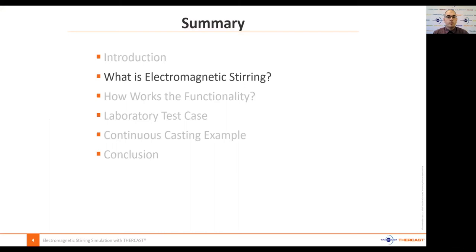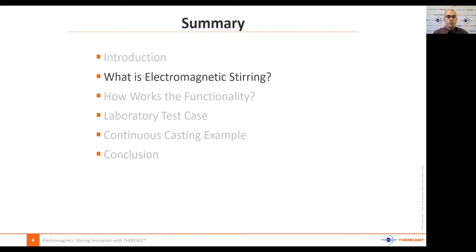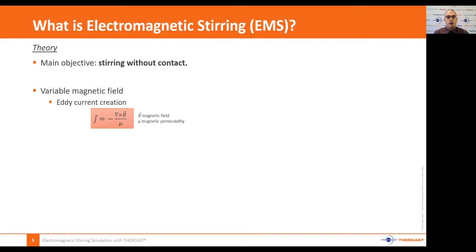Electromagnetic stirring makes it possible to put a conductive fluid into motion with an electromagnetic field without contact. The idea is to use a variable magnetic field that induces currents in the conductive fluid. The presence of these currents associated with the magnetic field will create Lorentz forces.